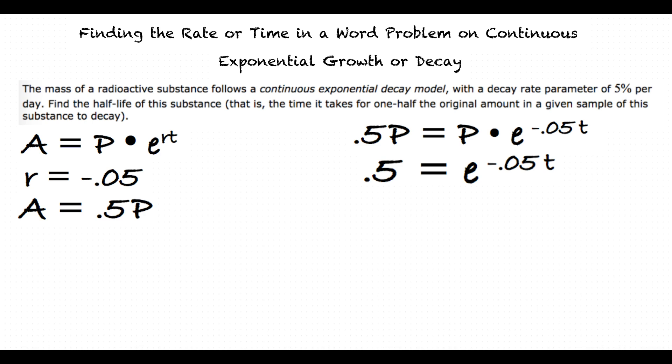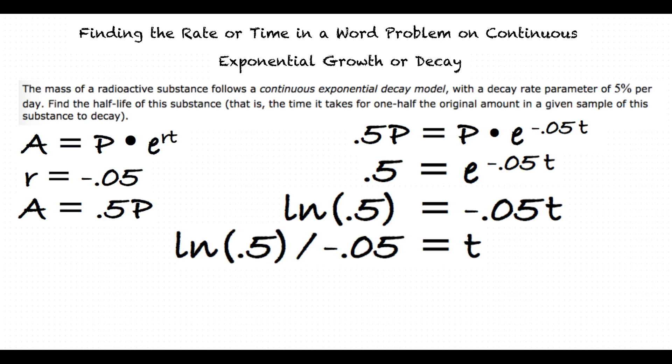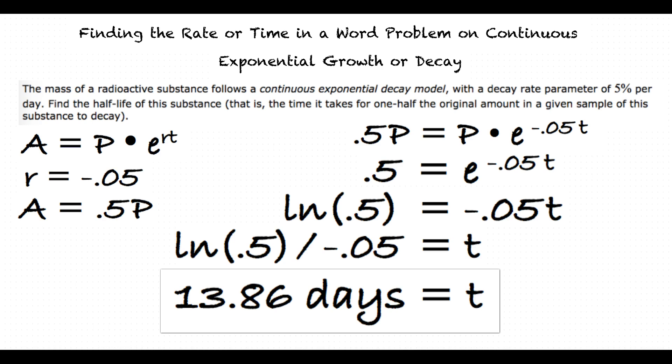Then we take the natural log of both sides to result in ln of one-half equals negative 0.05t. Solving for t yields t equals ln of one-half divided by negative 0.05. Then inputting this fraction into the graphing calculator yields t equals 13.86 days.